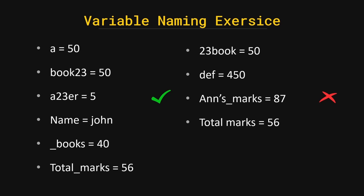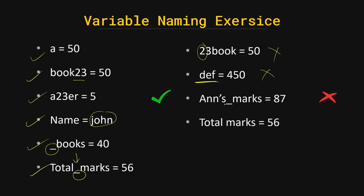Let's do some exercises on variable naming. 'a = 50' is acceptable. Using numbers at the end or in the middle of a variable name is okay. Using words as values is okay. Starting a variable name with an underscore is also okay. However, starting a variable name with a number is an error, using Python keywords like 'def' as a variable name is an error, using special characters is an error, and using spaces in a variable name is also an error.